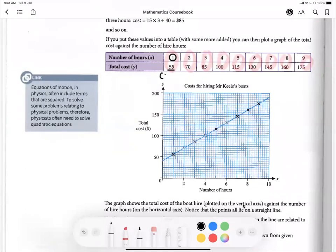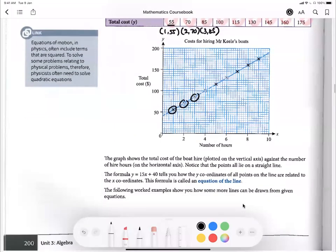So the coordinate that you ought to plot is 1, 55, 2, 70, 3, 85, you should get a straight line after that. So you've got this line, this line, this line, this point, this point, this point, these three points, and you just draw a straight line, then immediately you will get your answer.